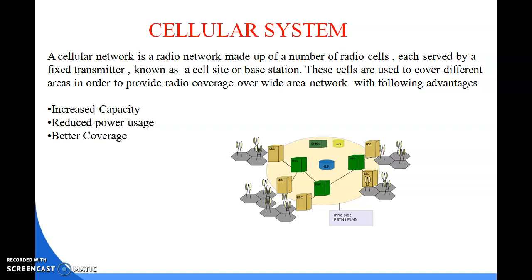That is the concept of reducing power use. If you mount one antenna for an entire city, the persons at a distance will struggle to access the system, whereas with multiple smaller cells the coverage and access improve significantly.